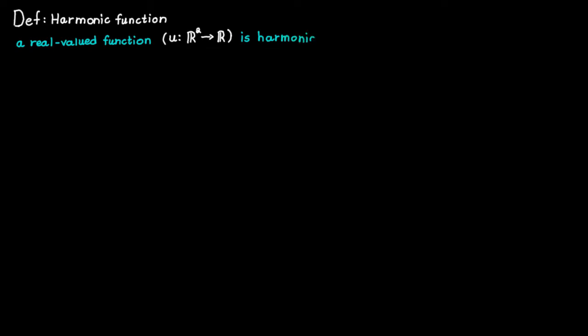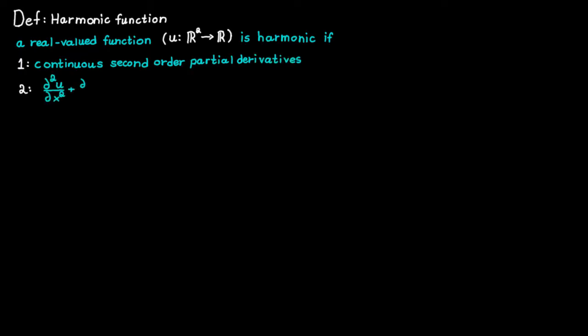The first definition states that a real-valued function — which is simply a function that has real numbers as output — is harmonic if the following is true. First, the function needs to have continuous second-order partial derivatives. Second, the function needs to fulfill the Laplace equation.